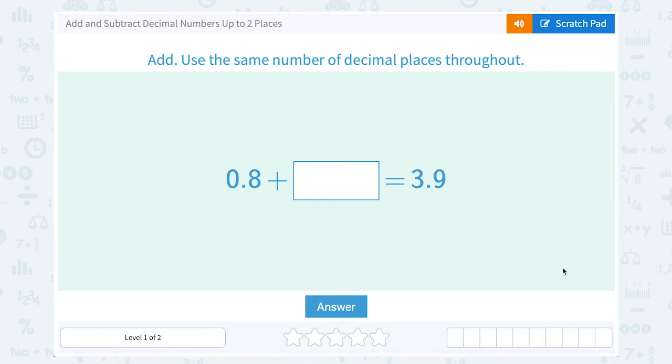Let's take a look at how to add and subtract decimal numbers up to two places. They asked us to add and use the same number of decimal places throughout. 0.8 plus some number is equal to 3.9.